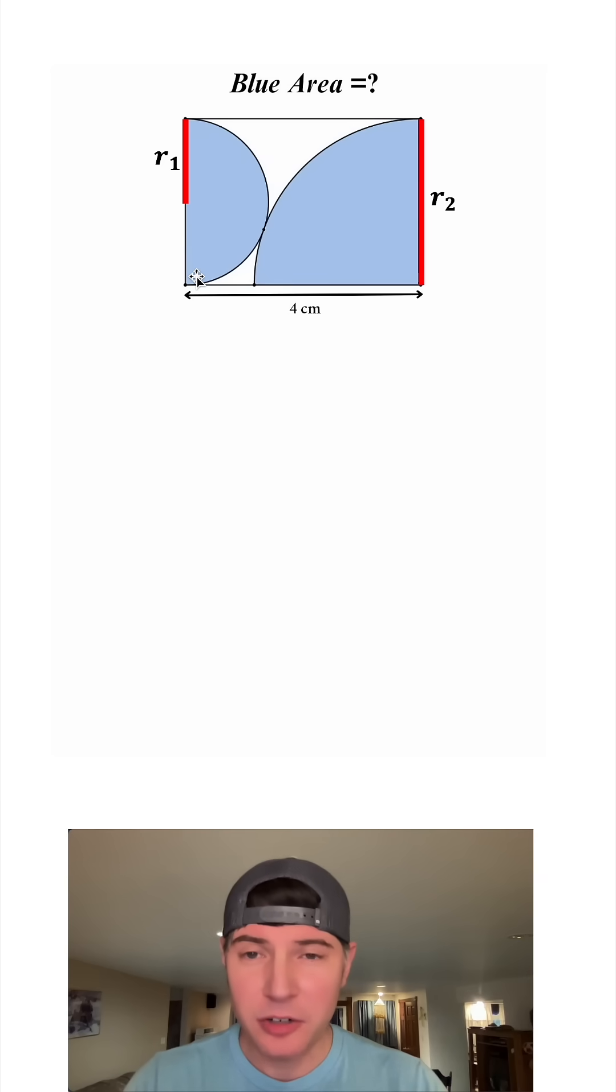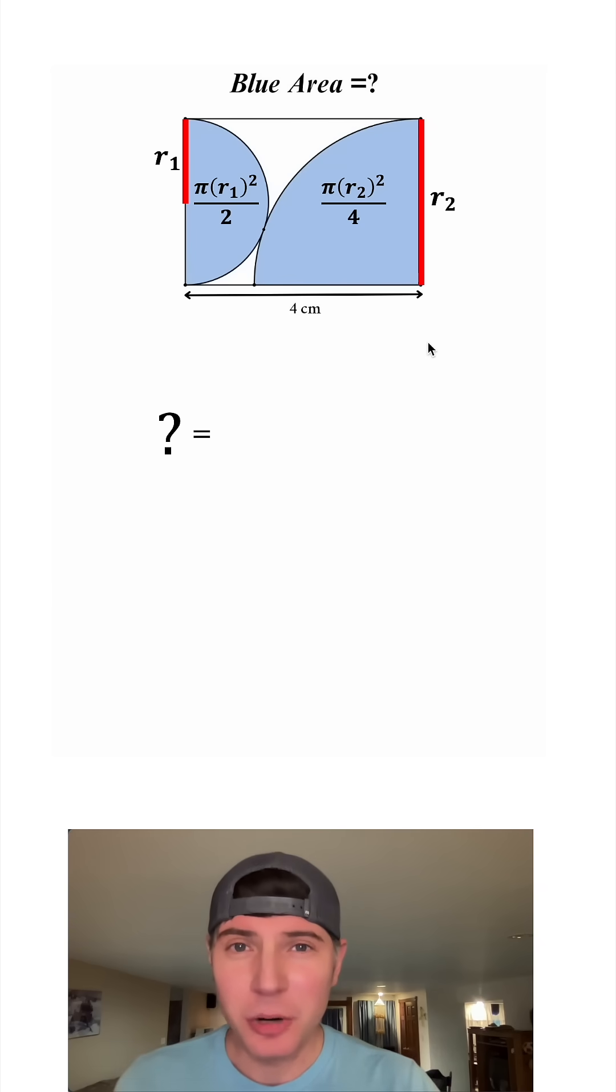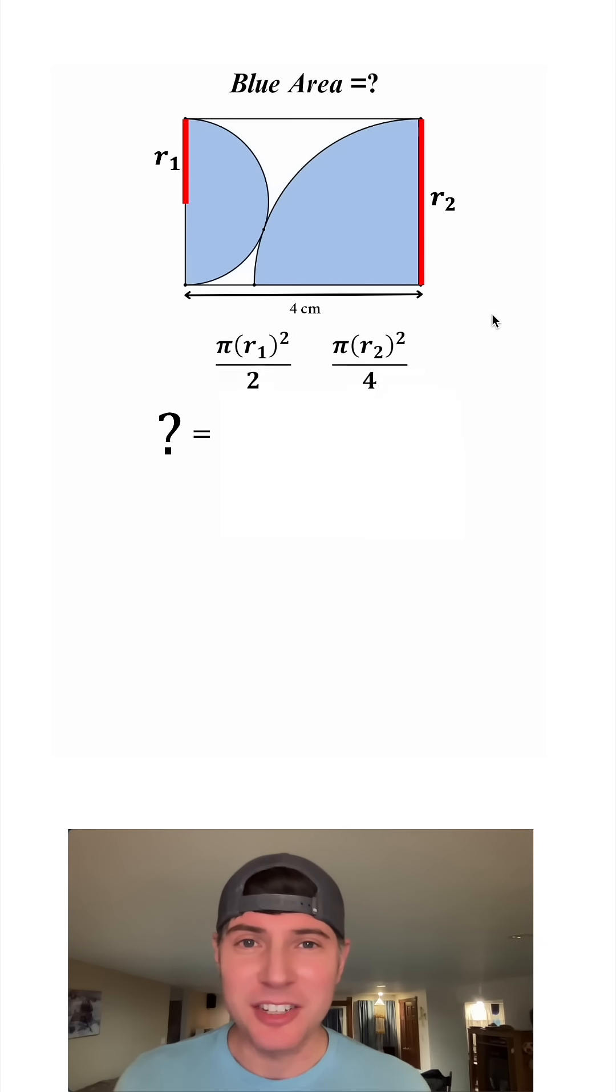The area of this semicircle is pi r sub 1 squared divided by 2, and the area of this quarter circle is pi r sub 2 squared divided by 4. So to solve for the question mark, we're going to add these two areas together.